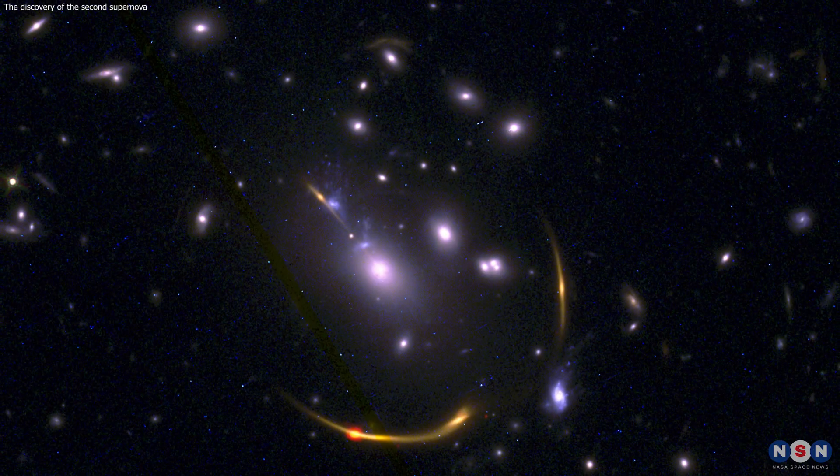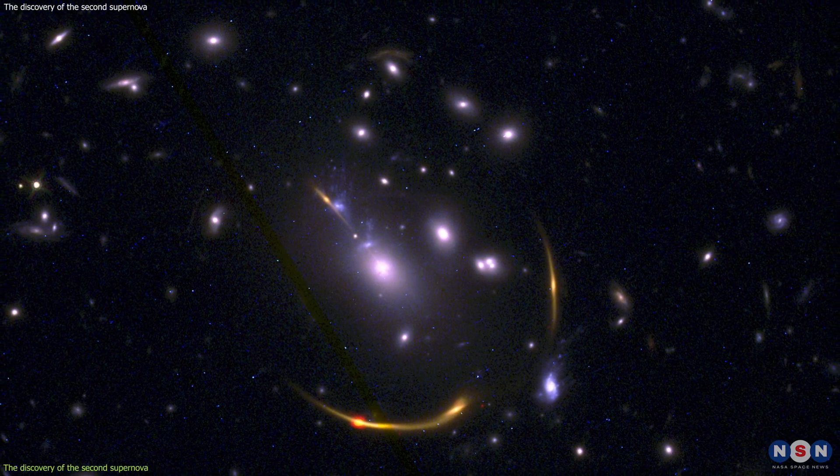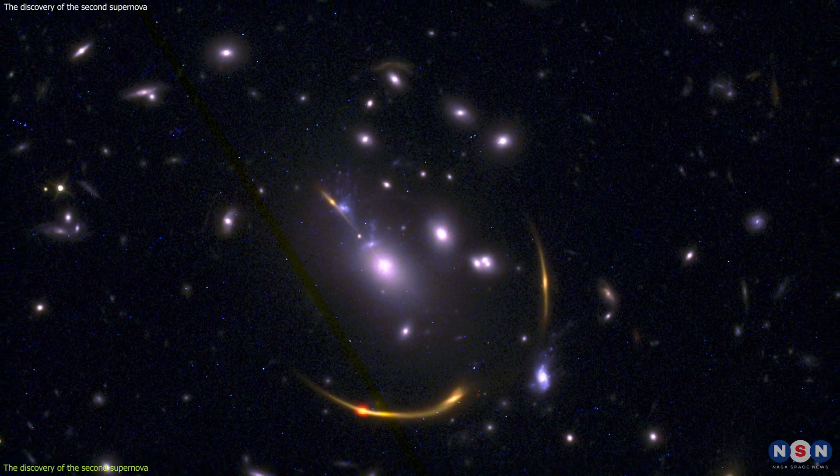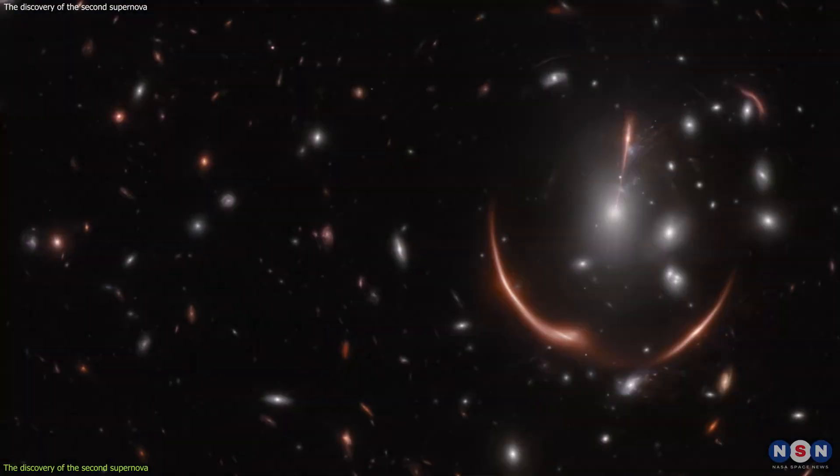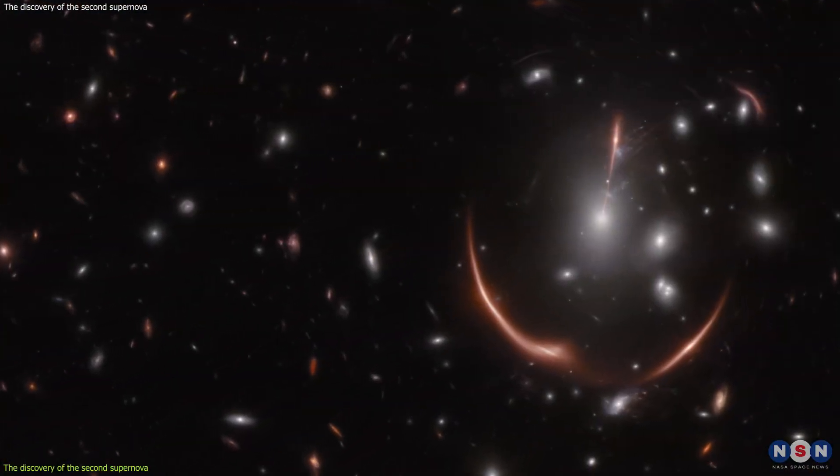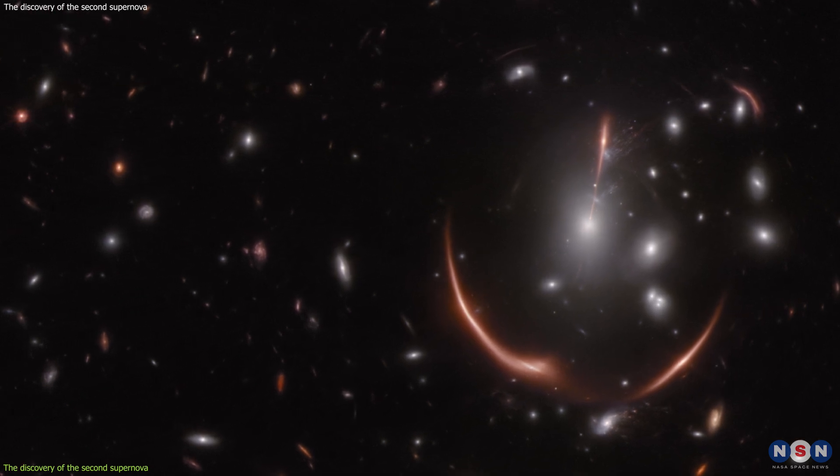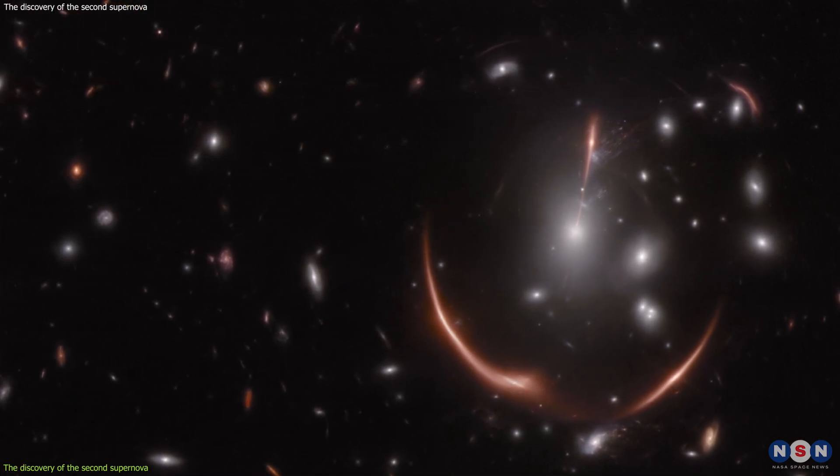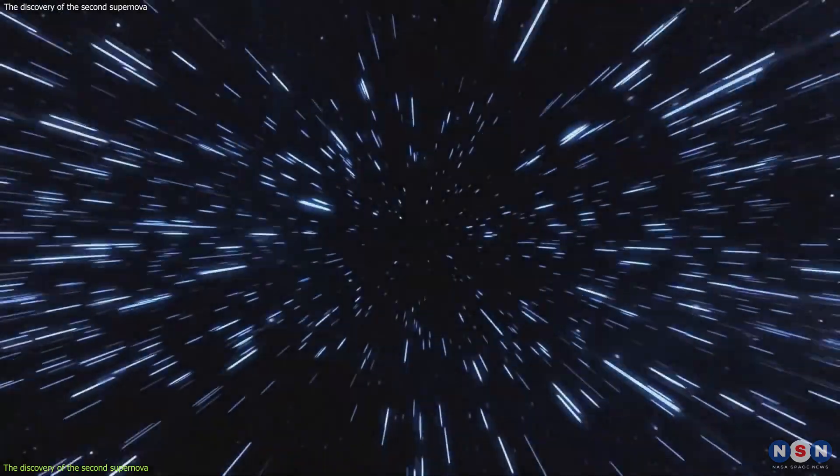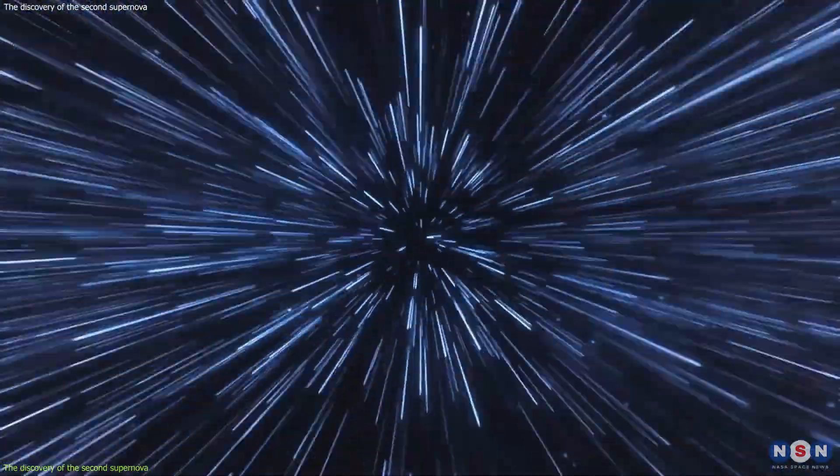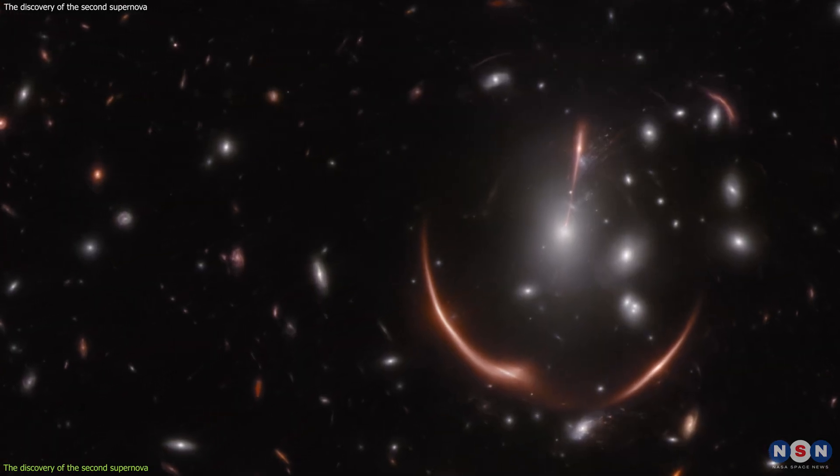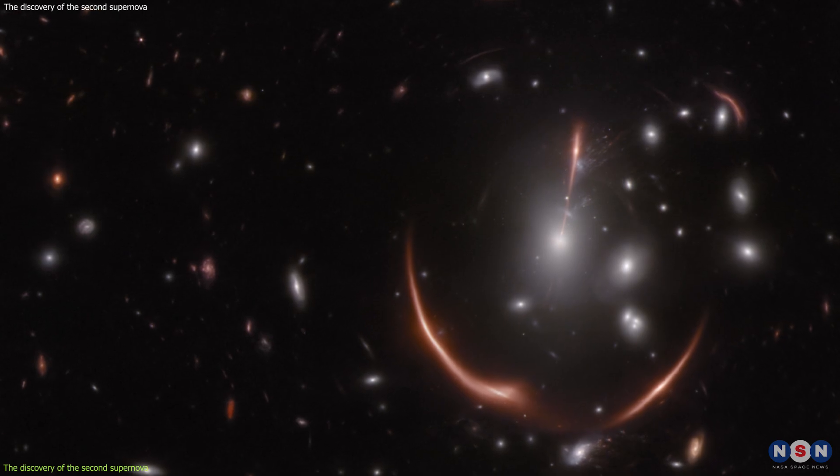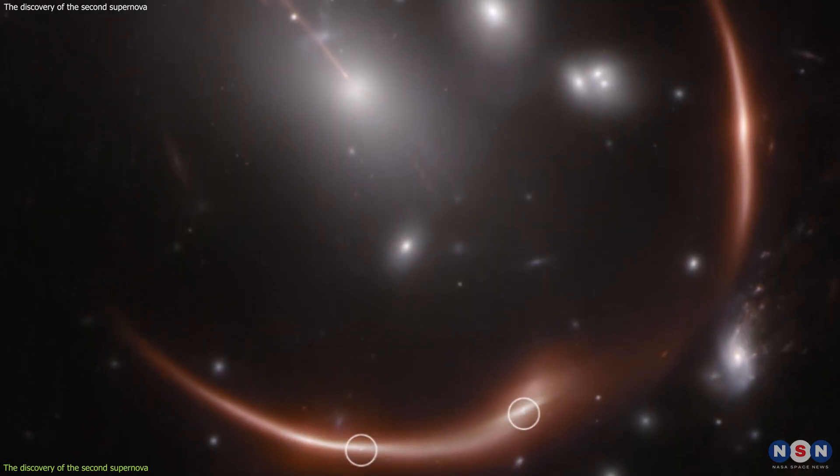One of the galaxies that Webb has been observing is MRGM0-138, a galaxy that is about 10 billion light-years away from us. This galaxy is gravitationally lensed by a massive cluster of galaxies named Max J0-138, which is about 4 billion light-years away. The cluster acts as a giant magnifying glass, creating four images of MRGM0-138 around it.